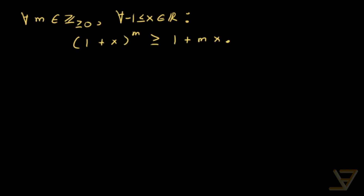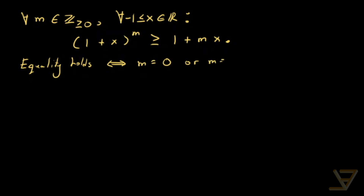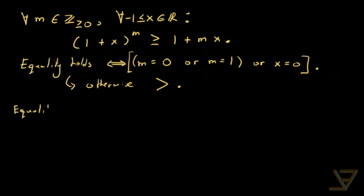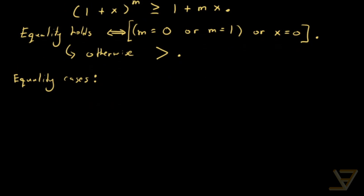This is not some esoteric inequality that lives in a vacuum. It actually does come up in the comparison of compound interest and simple interest, but I'll leave that for a different video. For now, let's just prove this in an abstract setting. We also want to prove that equality holds if and only if m equals zero, or m equals one, or x equals zero — otherwise we have a strict inequality. We're going to prove the equality cases first, because that'll allow us to focus on the non-equality cases and prove that the inequality is strict in those cases.